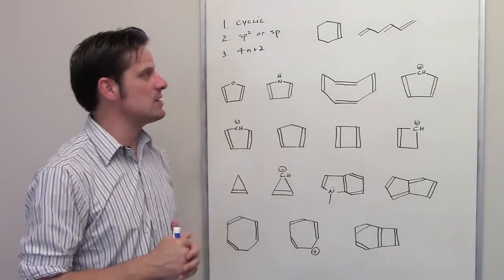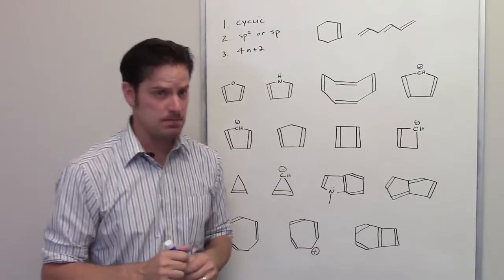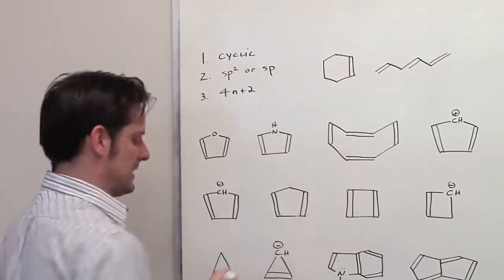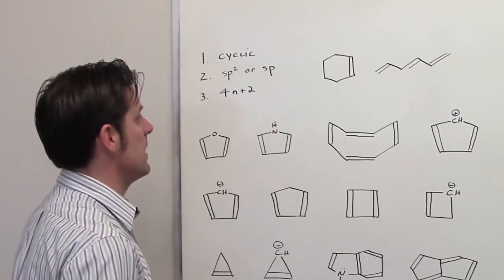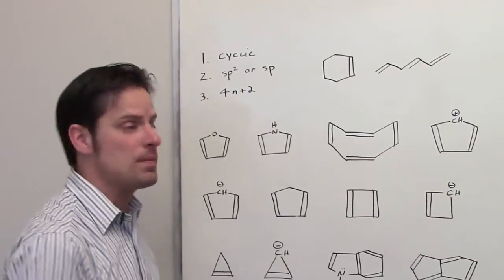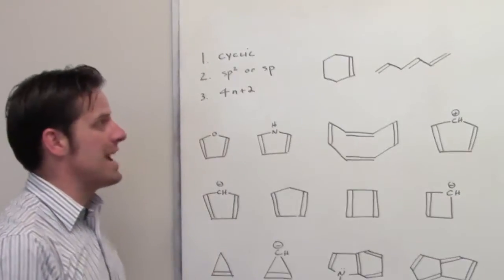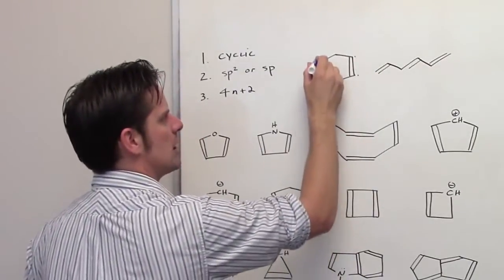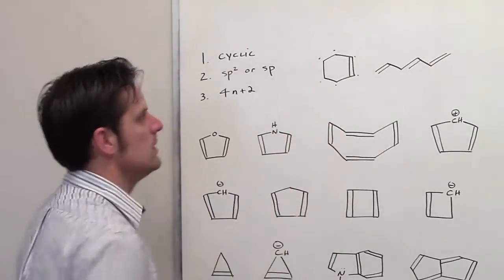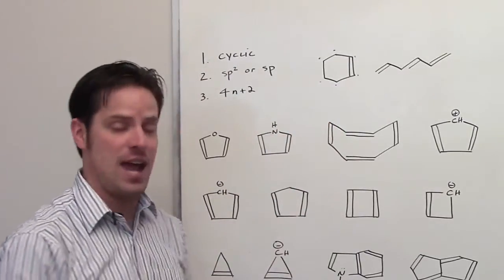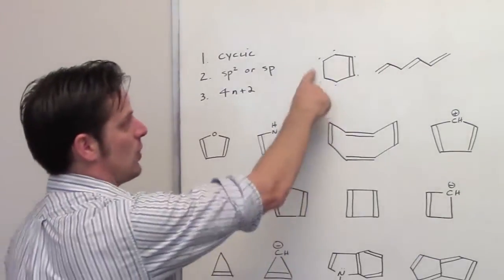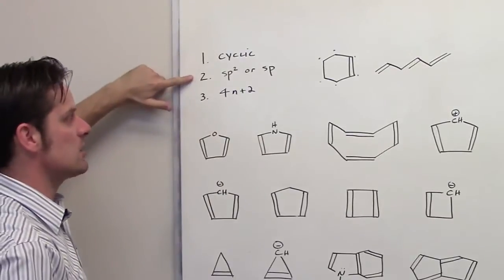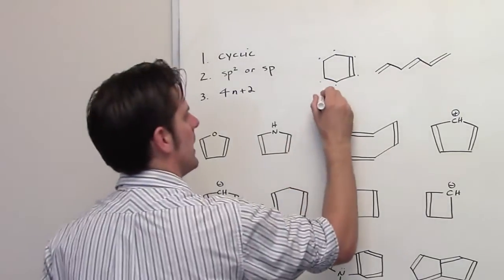Let's look at each compound. We'll begin with this one. Rule number one: is this molecule cyclic? Yes. Rule number two: are all the atoms either sp2 or sp hybridized in the ring? Well, two of the carbon atoms are, but these four carbon atoms are not — each of these four is a CH2, bonded to four things, so they are sp3 hybridized. This compound meets criterion 1, but not 2, which means it is non-aromatic.